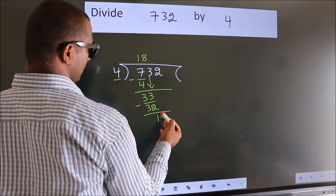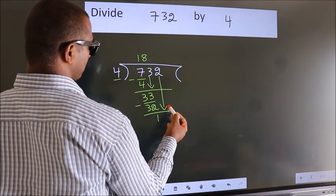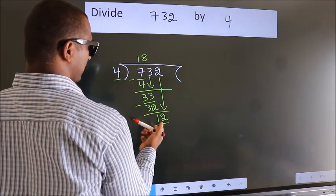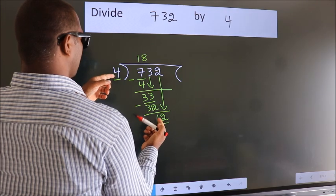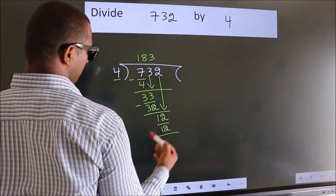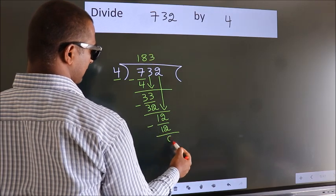After this, bring down the beside number. So 2 down. So 12. When do we get 12 in 4 table? 4 times 3 is 12. Now we subtract. We get 0.